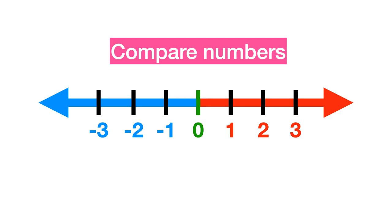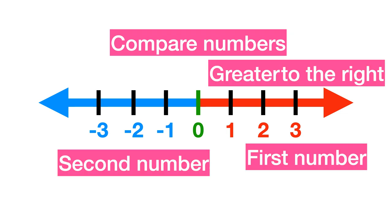The number line is an easy tool to compare numbers. Every point on a number line is assumed to correspond to a real number, and every real number to a point. You can use a number line to compare numbers — if a particular number is farther to the right, then that number is greater than the second.